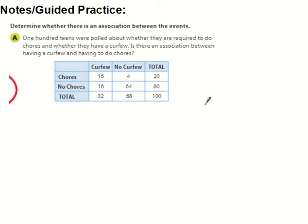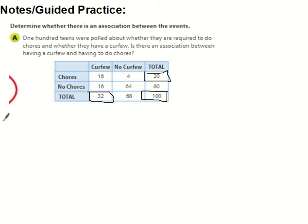So is there an association between having a curfew and having chores? If we look at having a curfew, that's 32 of them out of 100. Having to do chores was 20 of them out of 100. So we need to first find the relative frequency of just having chores. That ratio is 20 out of 100, which reduces to 2 out of 10.